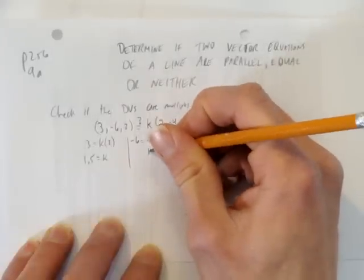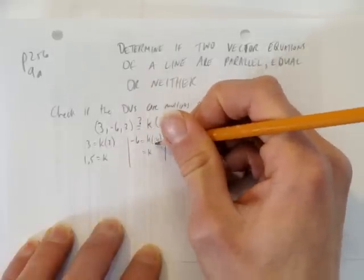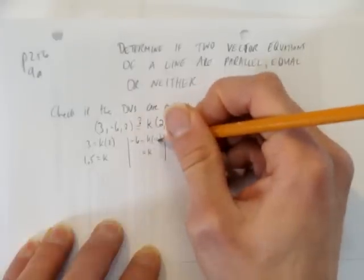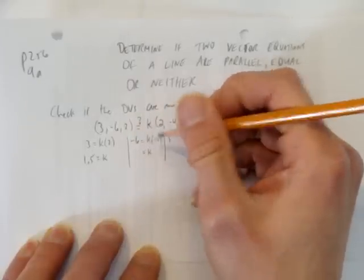And here, same thing. We'll go k equals, we divide both sides by negative 4, and if you want, use your calculator. Negative 6 divided by negative 4 is 6 over 4, which is 3 over 2. It's the same thing, 1.5.